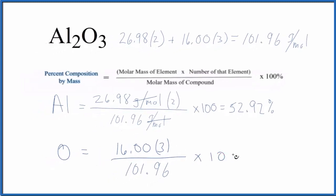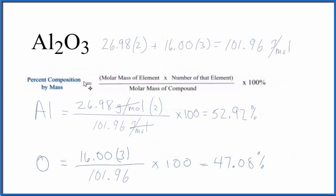Multiply it by 100. And we end up with 47.08. And that's the percent of oxygen here in Al₂O₃.